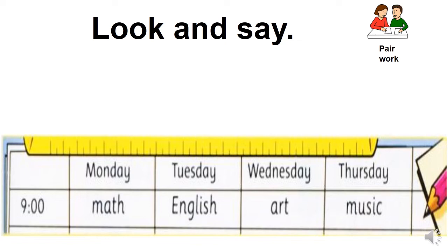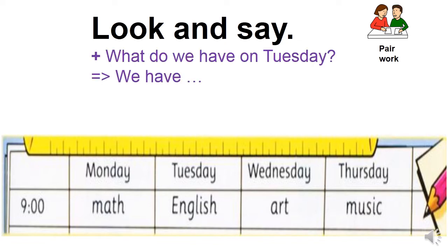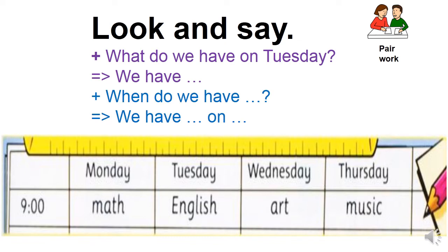Vào thứ 5 có môn gì. Trong lớp mình sẽ làm việc theo cặp như mấy tiết trước cô cũng nói. Nhưng vì mấy con đang học ở nhà, thì các bạn có thể làm việc với ba mẹ, anh chị, em, người nào kèm các bạn học tiếng Anh. Nếu không có thì các bạn cố gắng tự luyện. For example, I ask: What do we have on Tuesday? B answers: We have English.